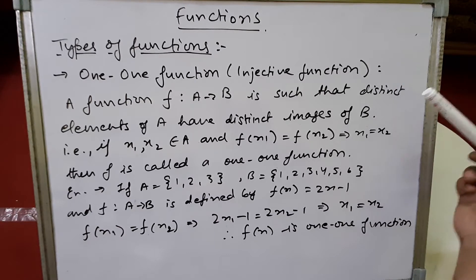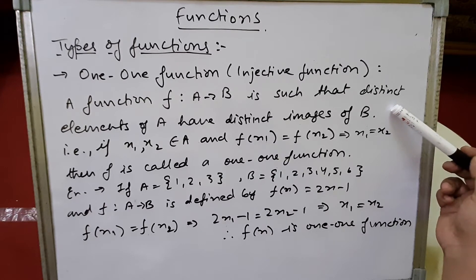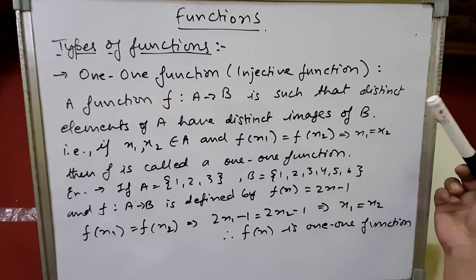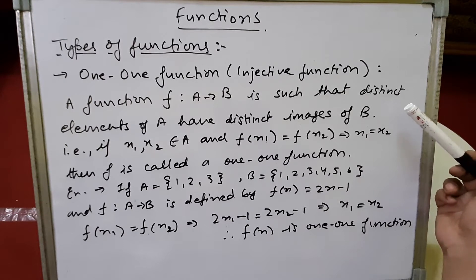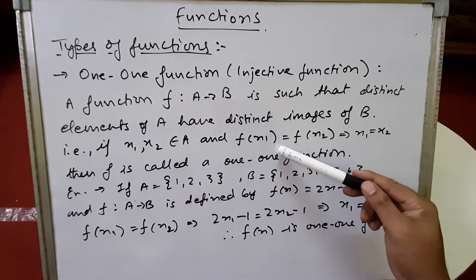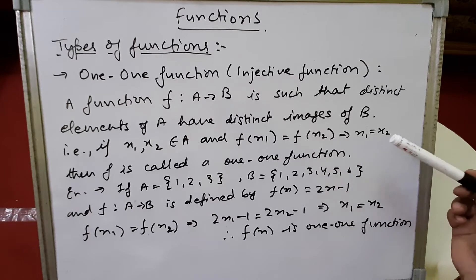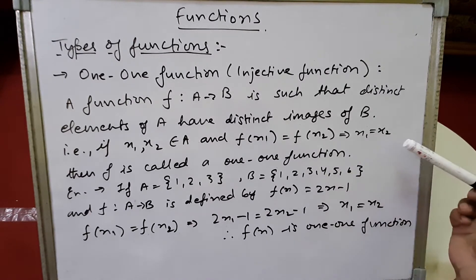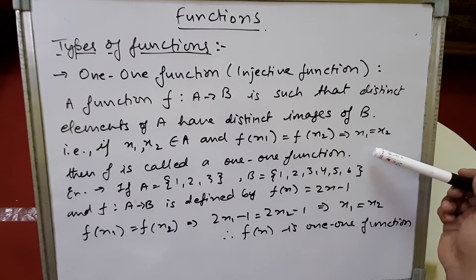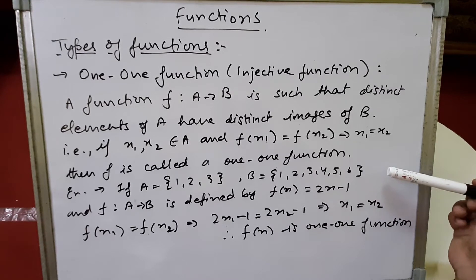A function f from set A to set B is one-one if distinct elements of A have distinct images in B — that is, different elements of A have different images in B. So we can say: if x1 and x2 belong to A and f(x1) = f(x2), then x1 = x2. If this condition holds, then f is a one-one or injective function.